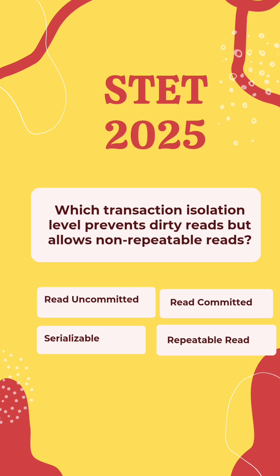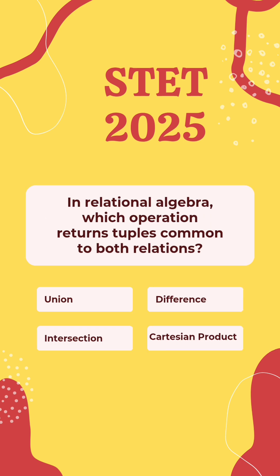Which transaction isolation level prevents dirty reads but allows non-repeatable reads? Options: Read Uncommitted, Read Committed, Repeatable Read, Serializable. The correct answer is Read Committed.